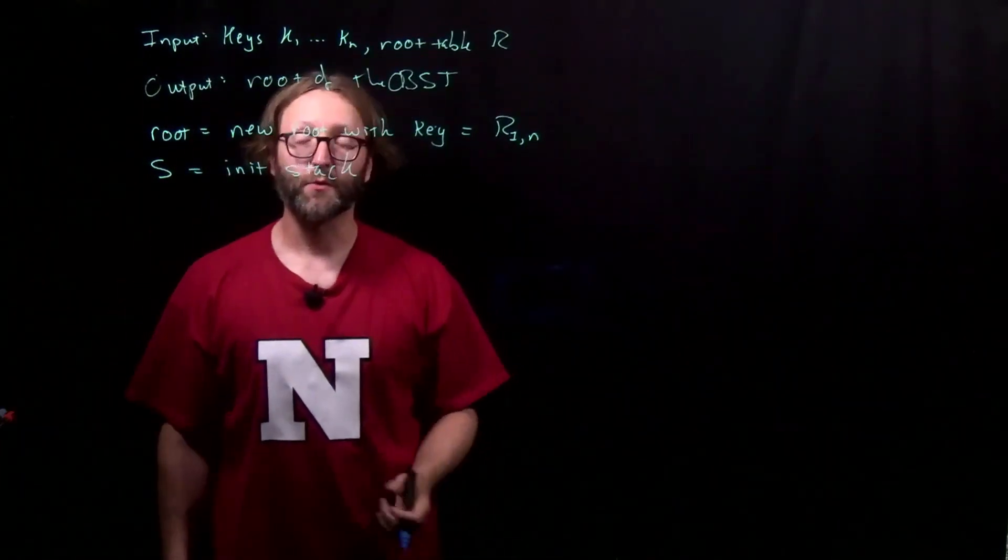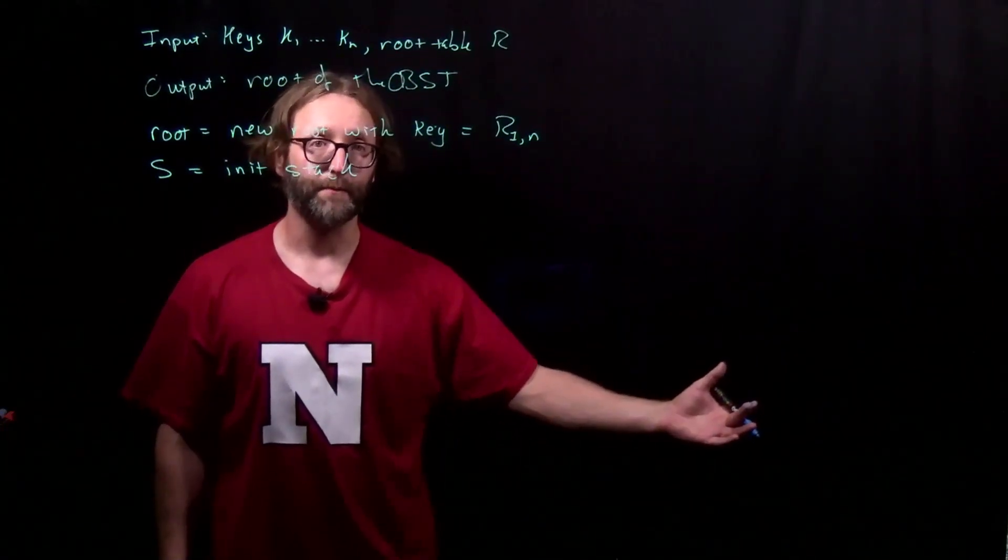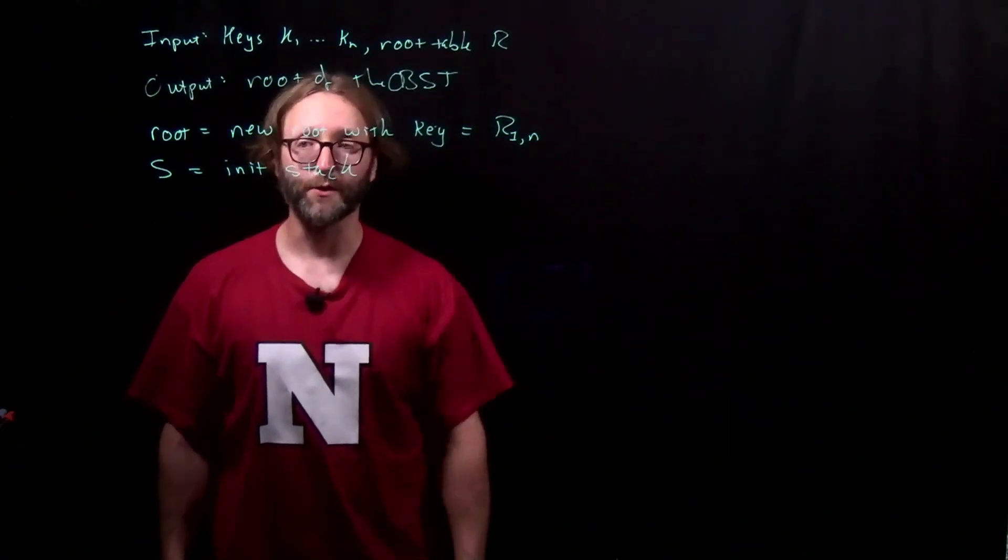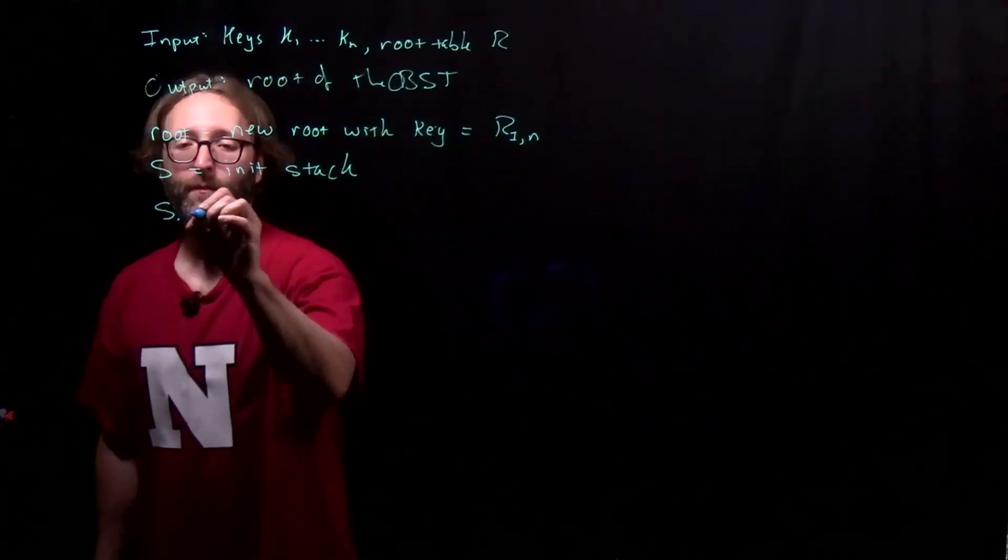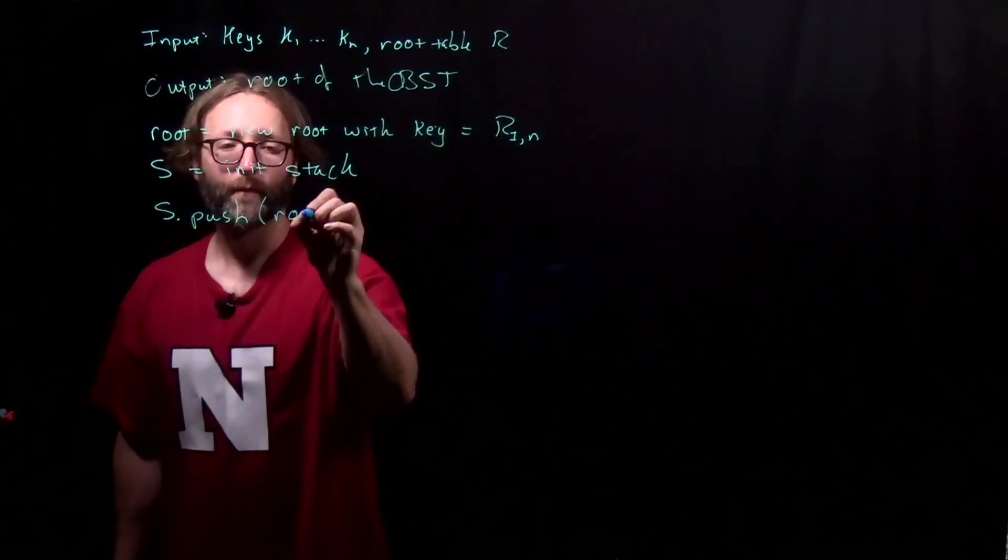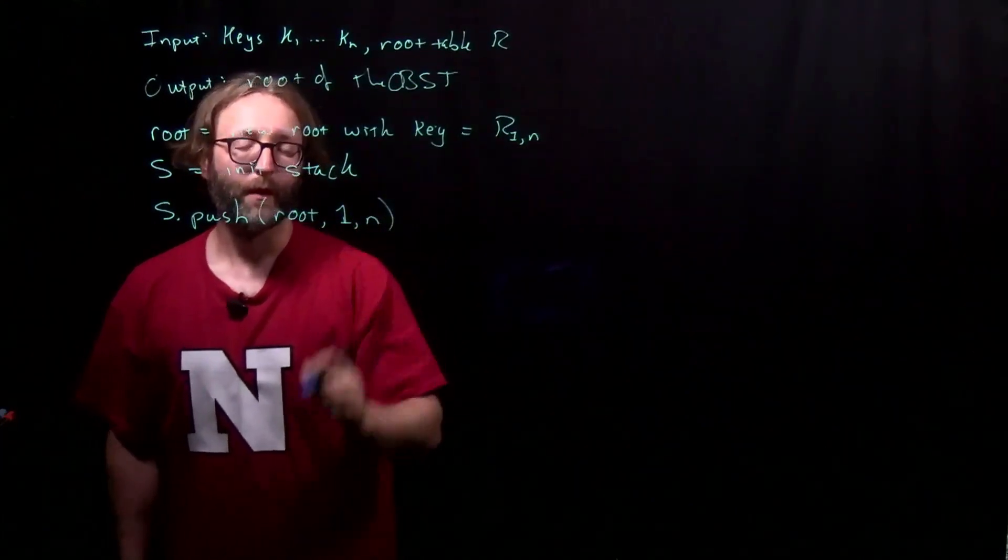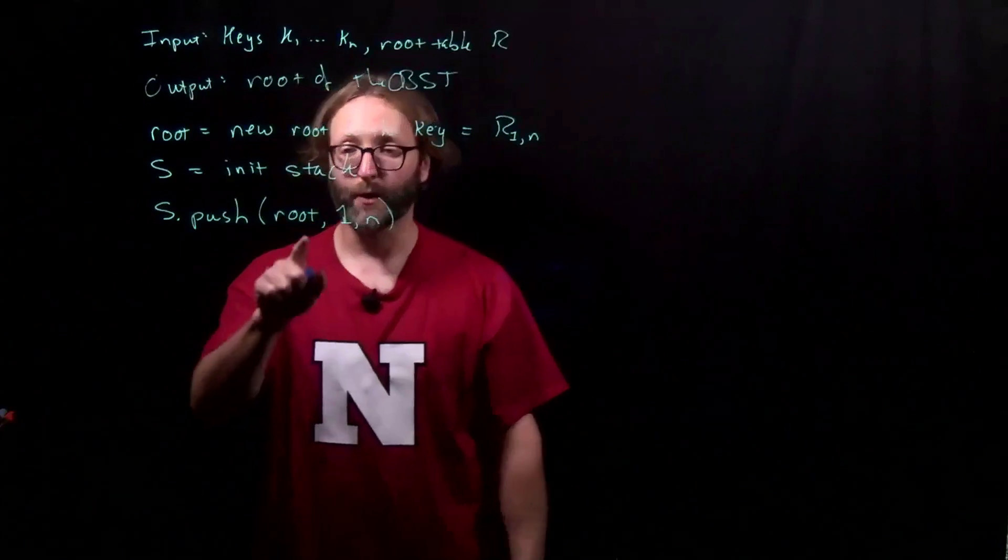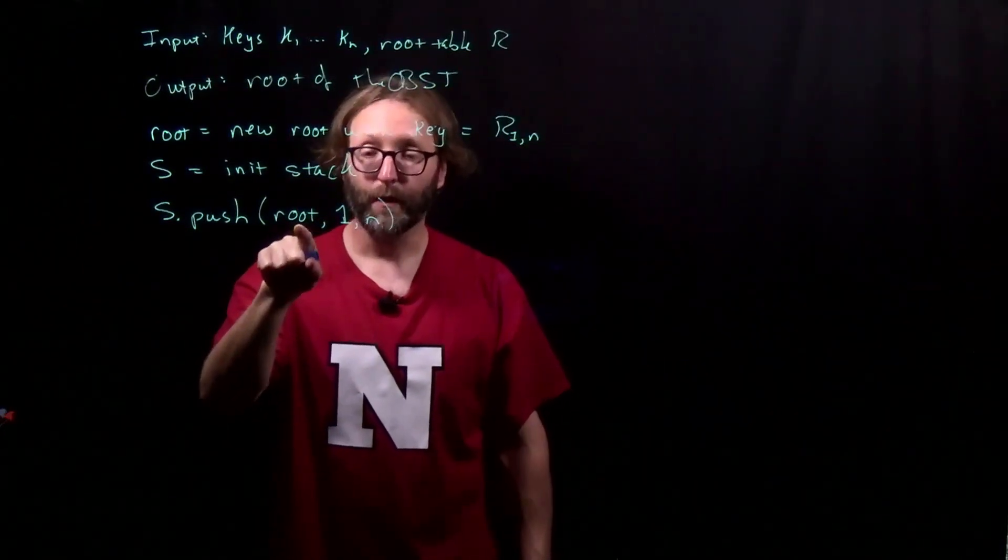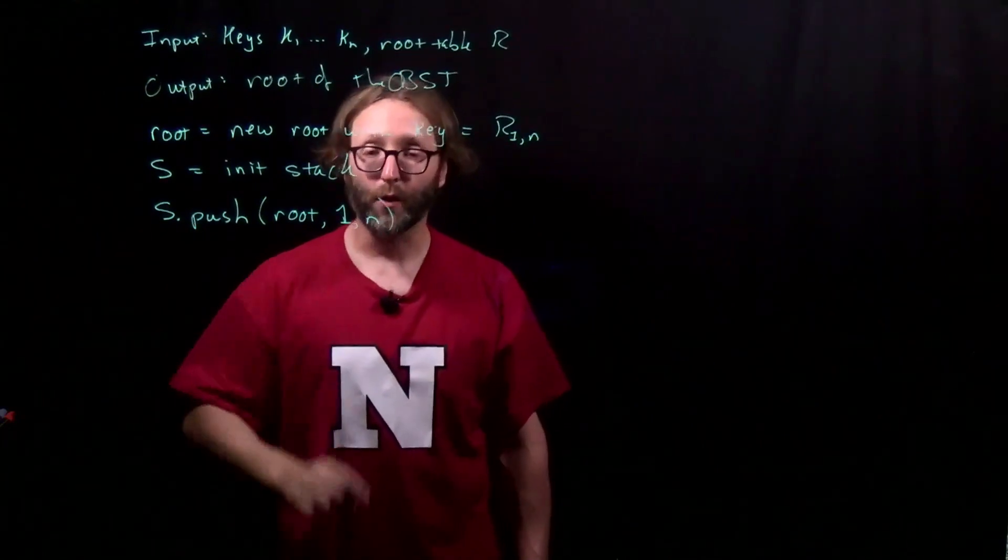We'll create a new stack, because we're going to push nodes onto that stack for later processing, just like a pre-order traversal. I'm actually going to push a tuple, a triple here. The node, as well as the key value ranges, i and j, that it corresponds to.